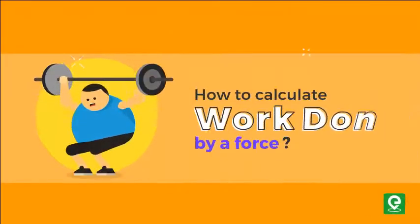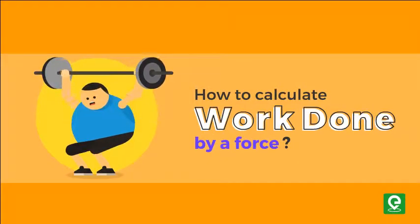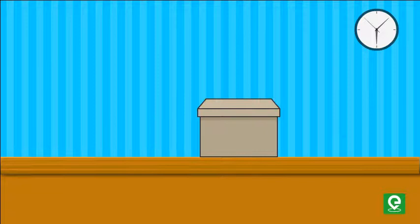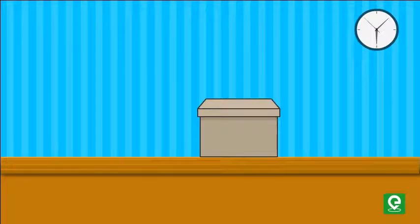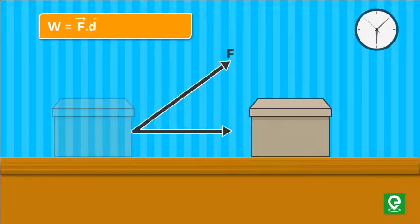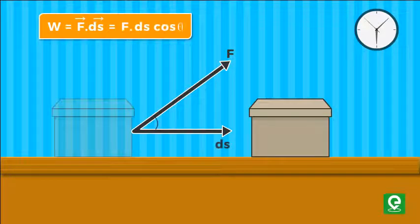How to calculate work done by a force in physics? Work is done whenever a force results in a displacement. Mathematically, work is defined as the scalar product of force and displacement. That is, W equals F into DS cos theta, where F is the force exerted, DS is the small displacement caused by the force, and theta is the angle between force and displacement.